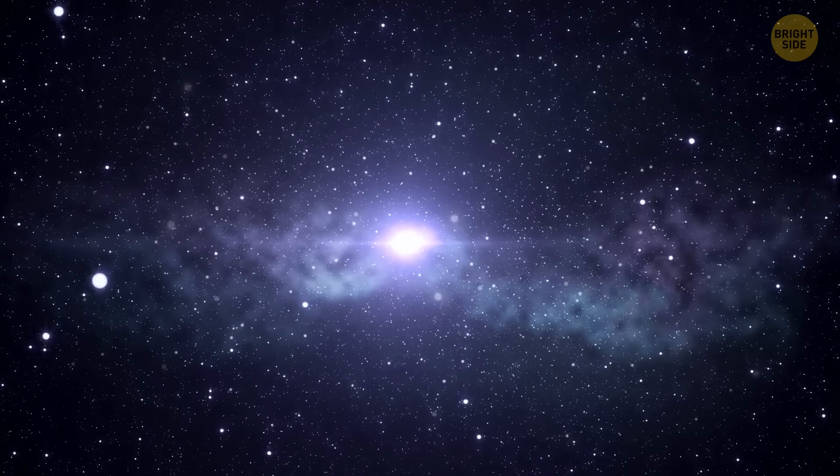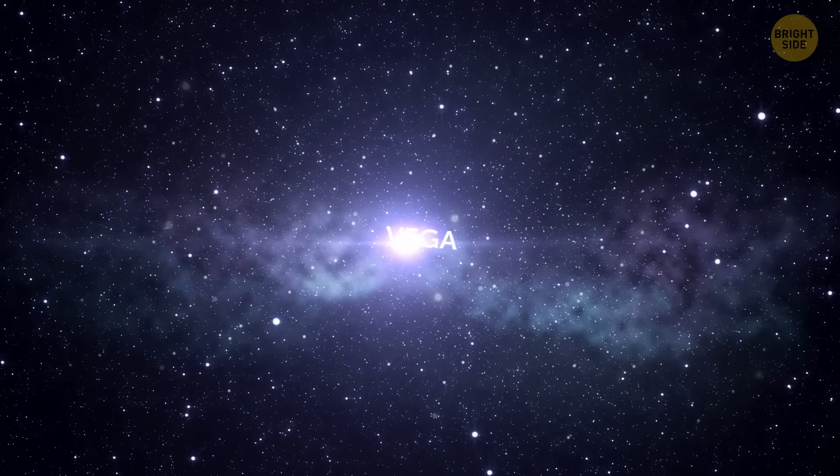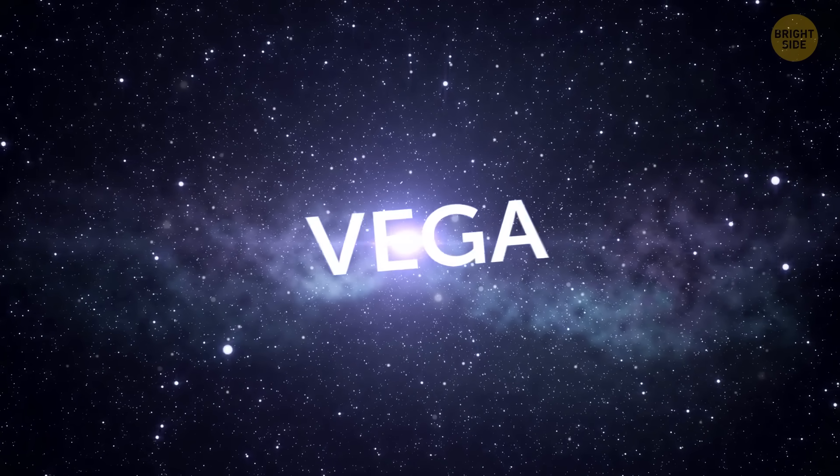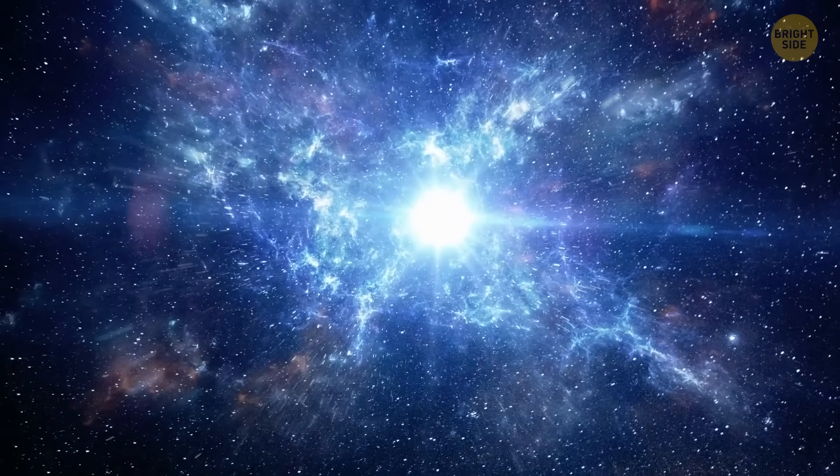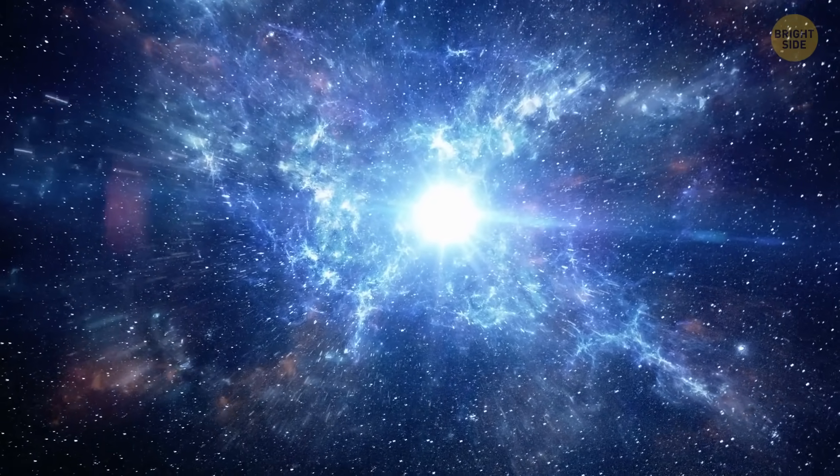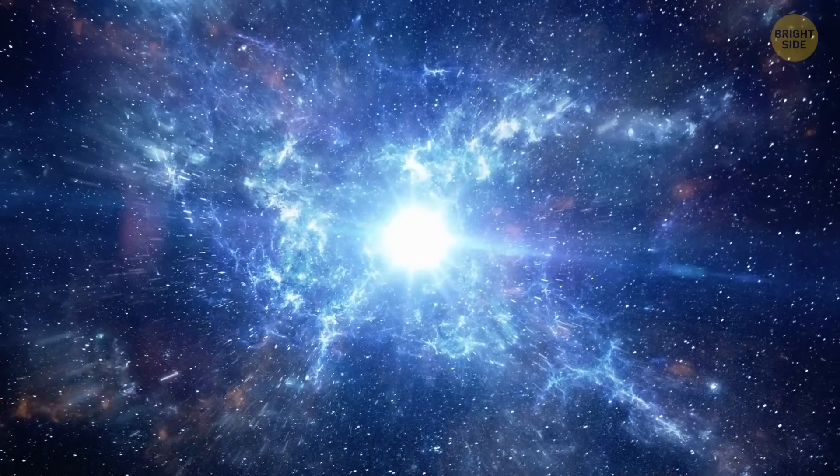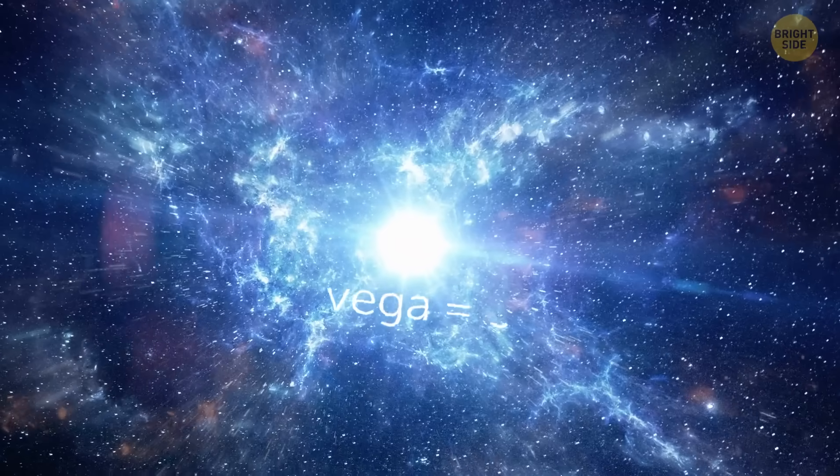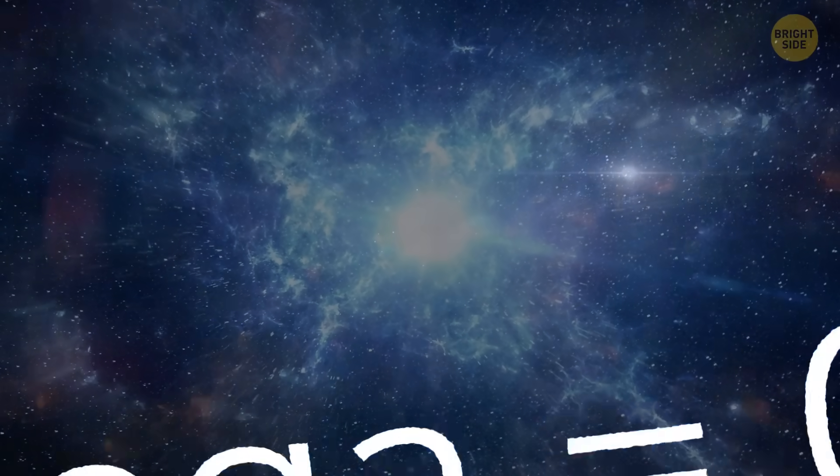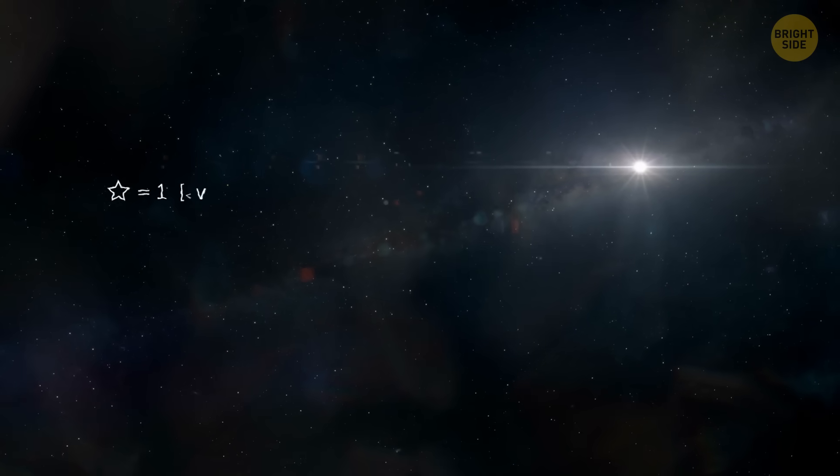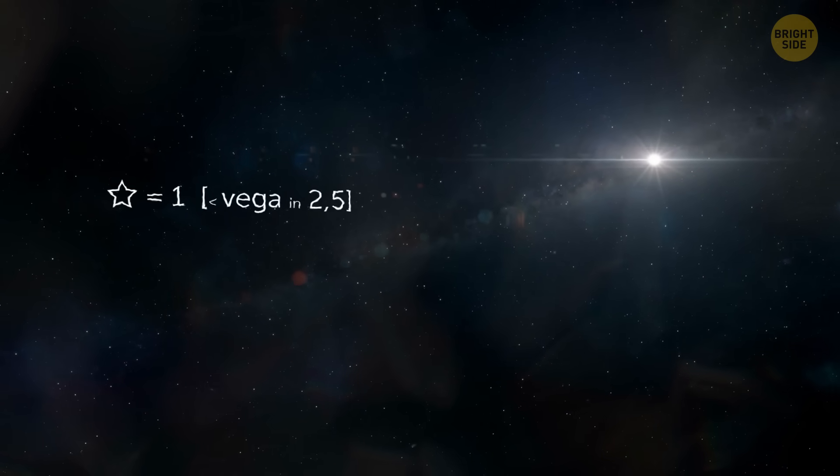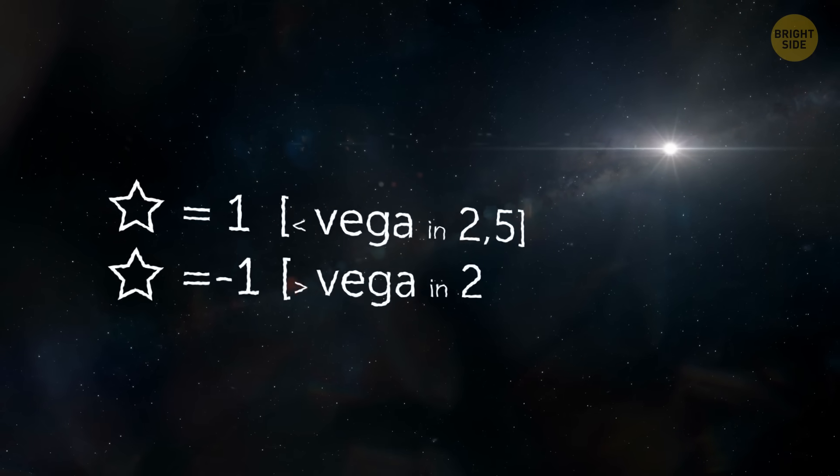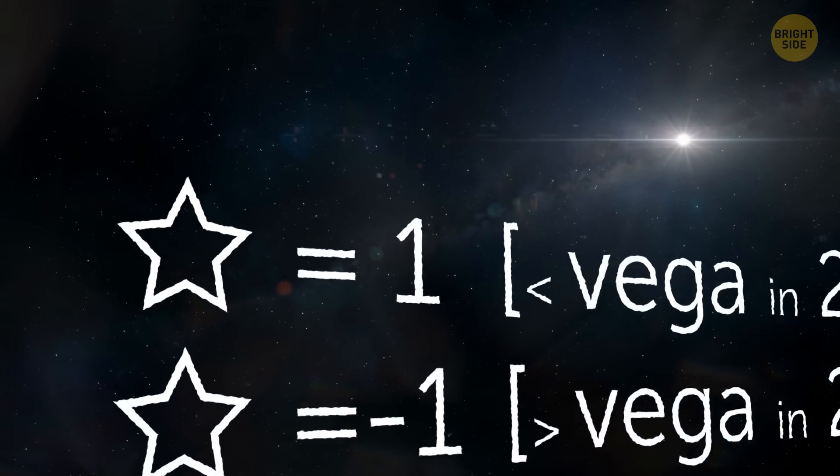But let's leave the diamond planet behind and fly to Vega, which holds a special place as one of the brightest and most important stars in the sky. The brightness of other stars is measured against the brightness of Vega on a special magnitude scale, where Vega's magnitude is zero. A star with a magnitude of 1 is 2.5 times dimmer than Vega, and a star with a magnitude of negative 1 is 2.5 times brighter.